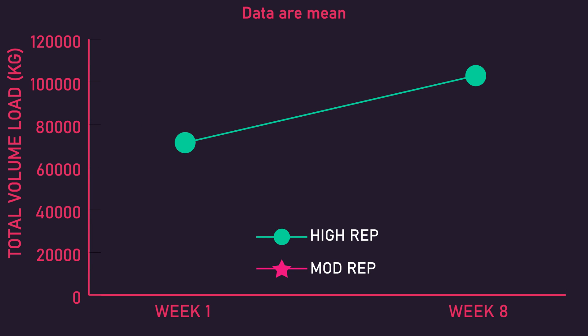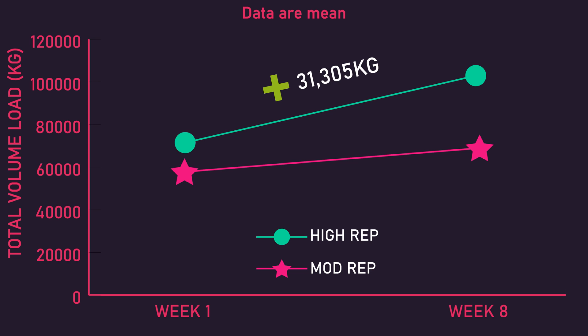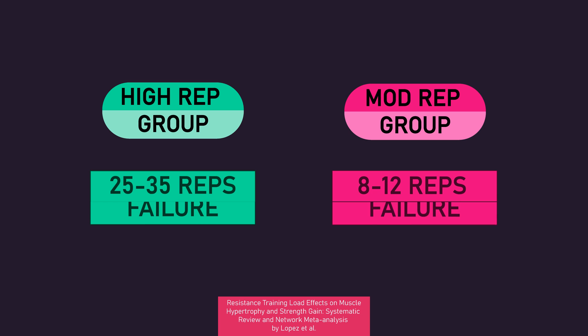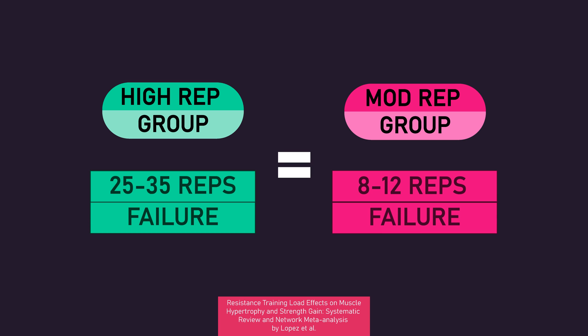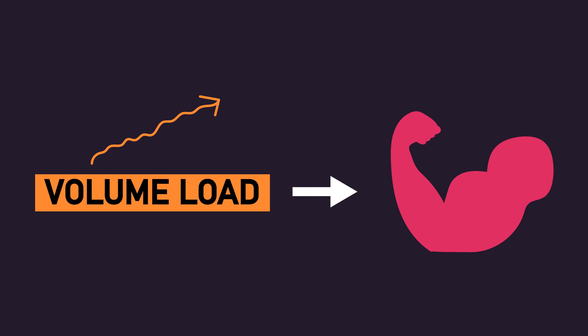By the 8th and final week of the study, the high rep group had increased their volume load performed for all exercises by 31,305kg compared to the first week. Opposingly, the moderate rep group increased their volume load performed for all exercises only by 10,714kg compared to the first week. However, as we know from other data, both the high rep and moderate rep groups would likely have experienced similar muscle hypertrophy, indicating your ability to increase volume load over time is likely not related to muscle hypertrophy.